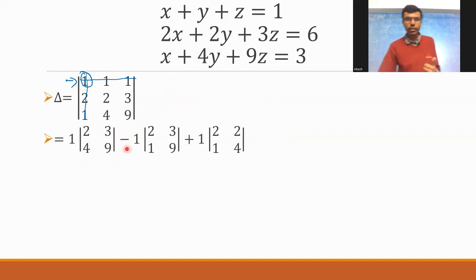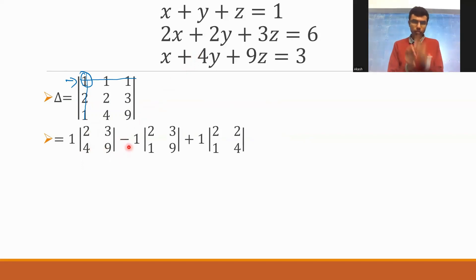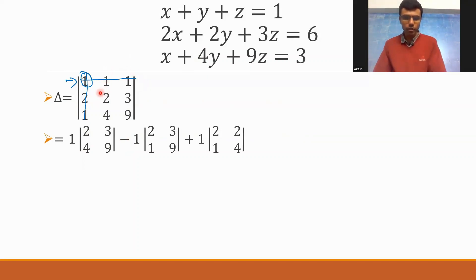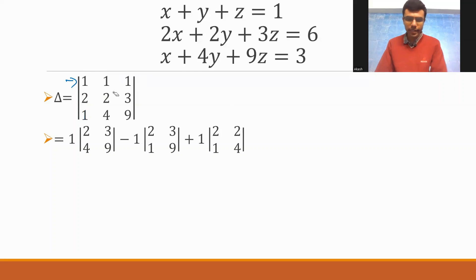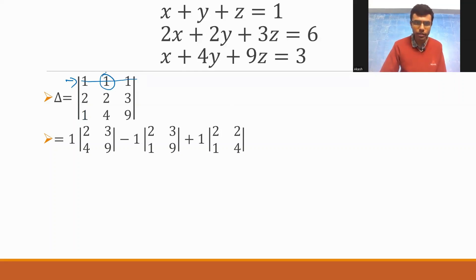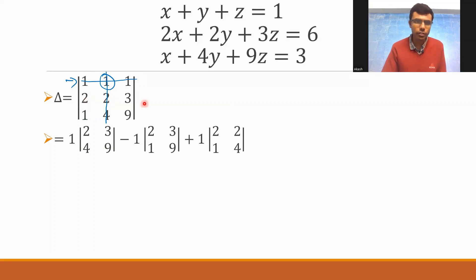There would be a minus sign in between — that's part of the formula. Minus the second element. Now strike off the row and column in which the second element is located. What I'm left with is 2, 3, 1, 9. That's why I have the determinant of 2, 3, 1, 9 here. Please follow the same order.